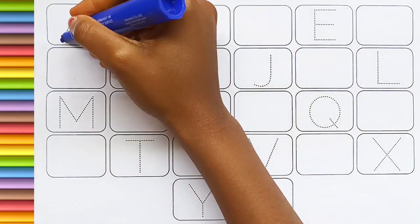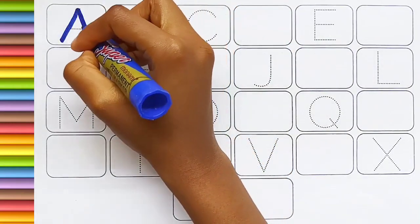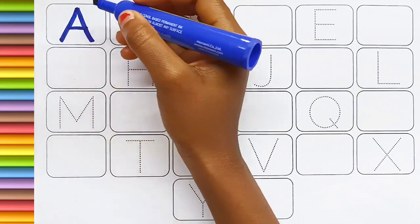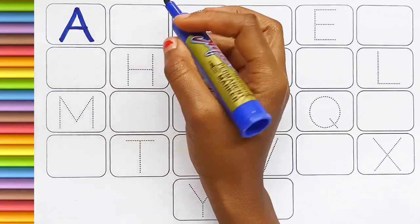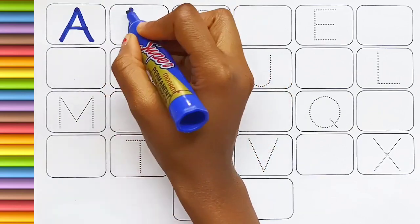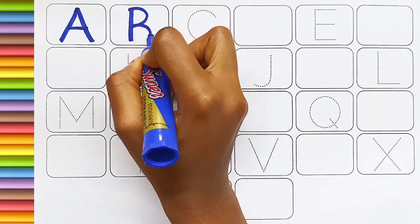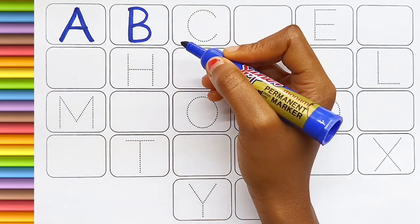Blue color. A. A for ants. B. B for banana.